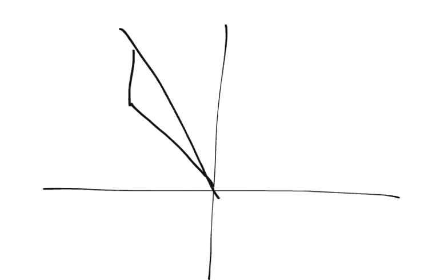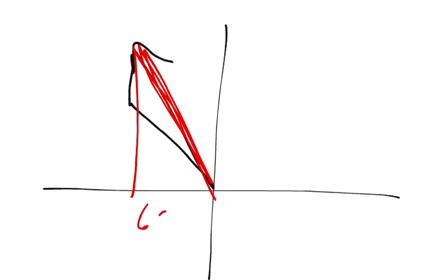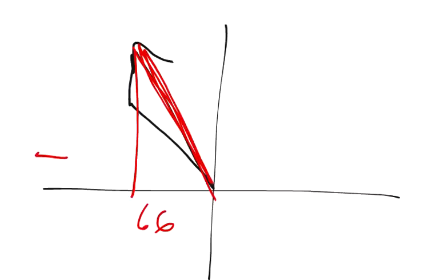Here's what I have. The hurricane went this way and it went that way. Now I want to find out this line right here. Let me make it in red. I know that my x is 66 and I know that my y is 145.12.